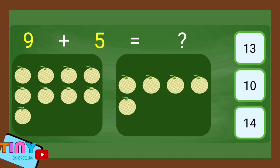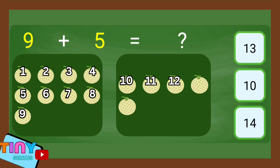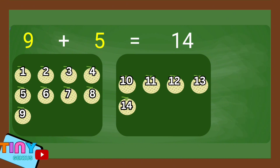9 plus 5 equal. 1, 2, 3, 4, 5, 6, 7, 8, 9, 10, 11, 12, 13, 14.